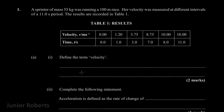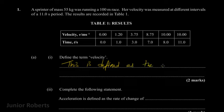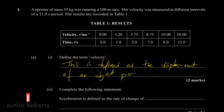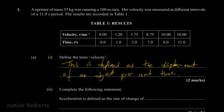The first thing this question wants us to do is to define the term velocity. The velocity of an object is defined as the displacement of an object per unit time. So velocity is simply the rate of change of displacement of an object, or it's the distance moved in a straight line per unit time. That is our definition for velocity.